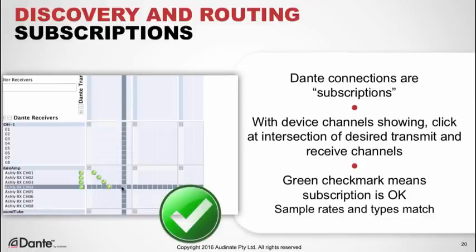If our sample rates and bit depths did not match, we would see an error message instead of the green checkmark. We've made several subscriptions in this example, and all we had to do was click at the intersections — see those checkmarks, and we're done.